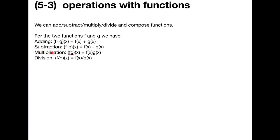We can easily multiply them. f times g of x — the product of two functions — equals f of x times g of x, where the operation on the right is the product of two real numbers. We can also divide them: f divided by g is given by f of x divided by g of x. Just be careful for the division part — this is defined whenever g of x is not equal to 0, because we cannot divide by 0.